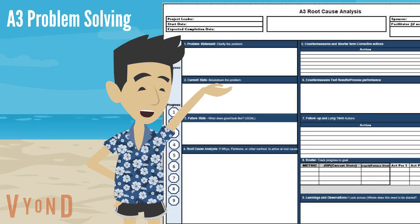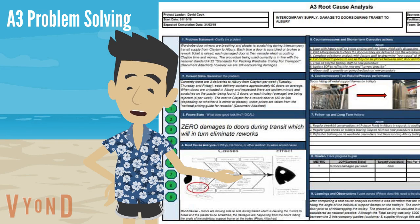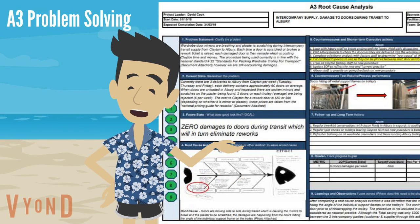It's best to use a standard template right across your organisation. Note the header has valuable information such as the name of the activity, the project leader, the team, the sponsor, and the start and expected finish dates. The A3 problem solving template allows you to show all the workings of your activity on the one A3 page. This is helpful for communicating to non-team members and works well when presenting your project and results to senior leaders.